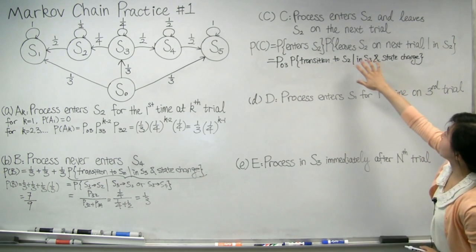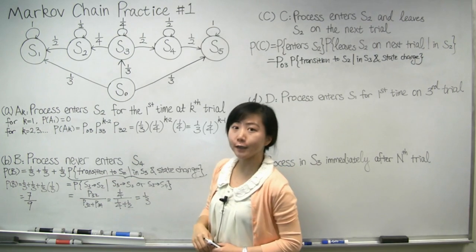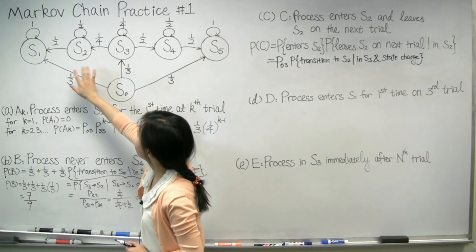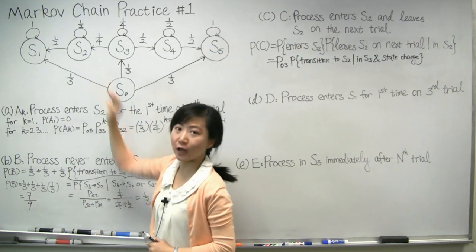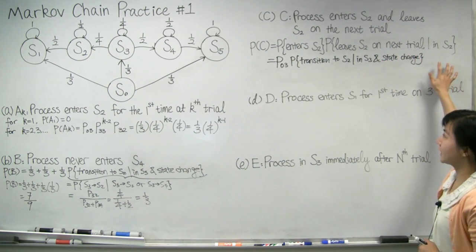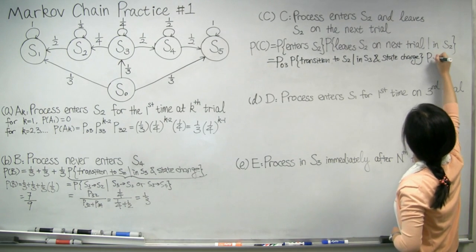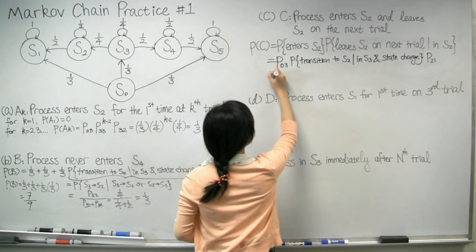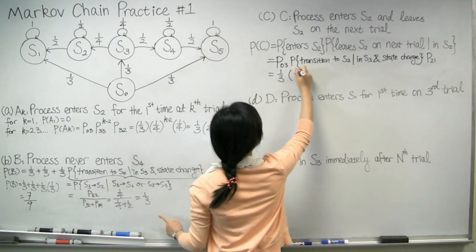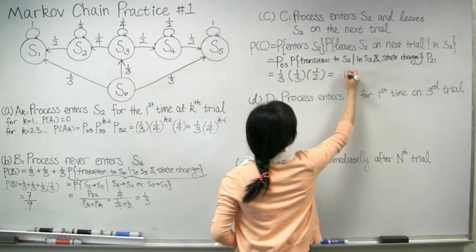Let's then look at the second probability term: the probability that the process leaves S2 on the next trial given it's already in S2. Given that the process is already in S2, it can take two transitions: it can either transition from S2 to S1, or make a self-transition from S2 back to S2. Therefore, this conditional probability is simply equal to the transition probability P21. So the overall probability is P03 times one-third times P21, which is one-third times one-third times one-half, giving us one over 18.